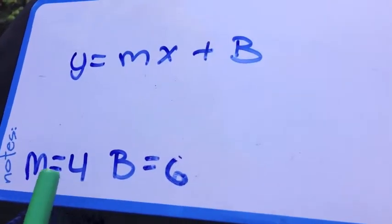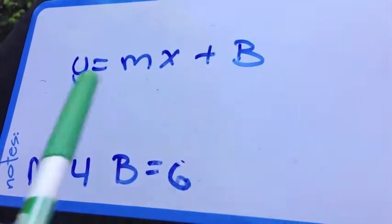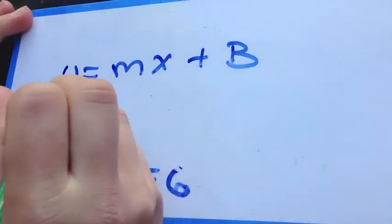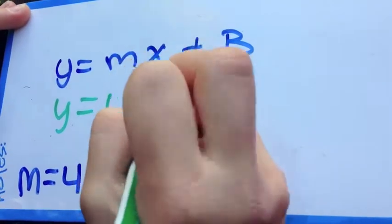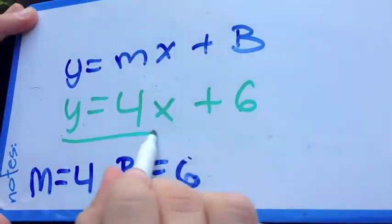Now, I'm going to plug in 4 for m and 6 for b. So y would equal 4x plus 6. And there you have your final equation.